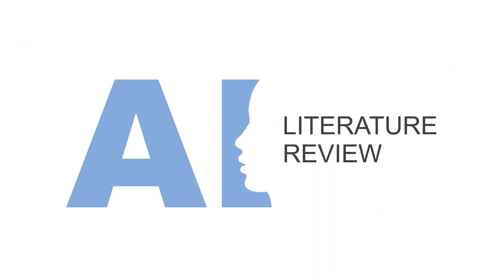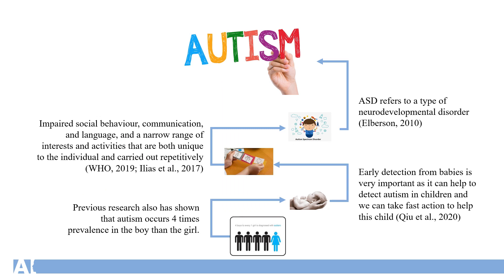Now let's look at the literature review. Autism is referred to as ASD, a neurodevelopmental disorder. It impacts social behaviour, communication and language, and involves a narrow range of interests and activities that are unique to the individual and carried out repetitively. Early detection from babies is very important as it can help detect autism in children and enable fast action. Previous research also shows that autism may occur four times more prevalently in boys than girls, though this remains under mystery.